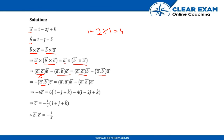We have minus 4c vector on the left. Then a dot a: 1 squared plus (minus 2) squared plus 1 squared equals 1 plus 4 plus 1, which is 6. So we have 6b vector on the right-hand side.